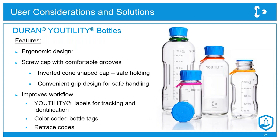This is the Duran Utility Bottle — a next-generation lab bottle launched several years ago with many features focused around safety. The bottle is slimmer with a much smaller diameter, and has side grips to prevent slipping with wet hands. The cap is cone-shaped, giving a much more secure grip than a conventional cap to prevent droppages. It also includes color-coded tags so that the same labware can be used in specific experiments.